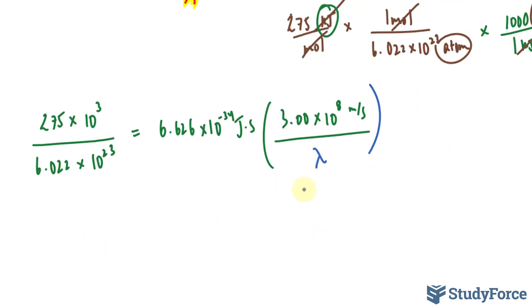To isolate for the wavelength, I'll multiply both sides by lambda. This will cancel out here and it will be brought here. And then I'll divide both sides by what this is equal to. So I have lambda is equal to the product of these two numbers.